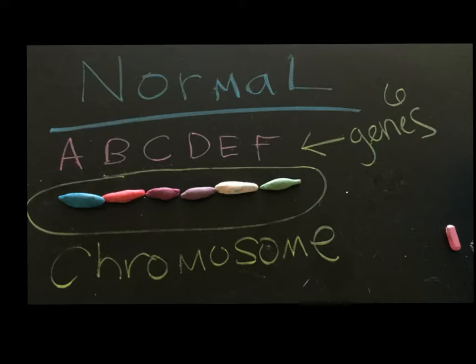In this first picture you can see a normal chromosome with six genes. Each of those genes is a different color and the first gene is gene A. It is blue. The second is gene B, then gene C, D, E, and F in order.